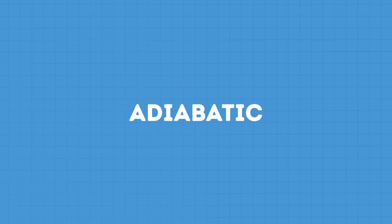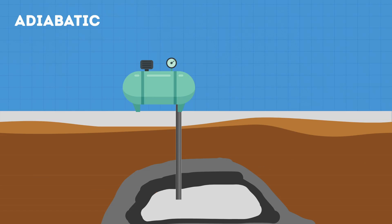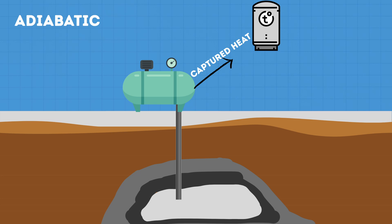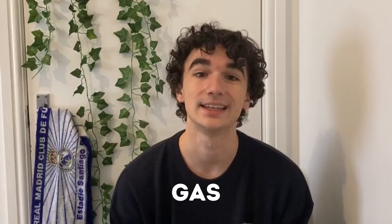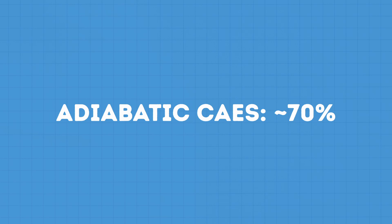Adiabatic is an improvement to the diabatic system. Since gases heat up when compressed and cool down when expanded, adiabatic systems capture the heat at the compression stage and store it in a thermal energy store — which can contain gravel — which is then reused to heat up the air when expanded. Due to utilizing the heat within the system and not needing to add natural gas, adiabatic CAES can achieve 70% round-trip efficiency, whilst diabatic achieves around 45%.